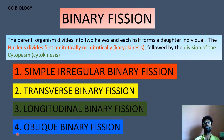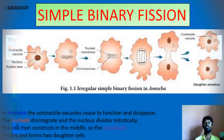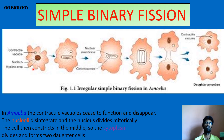Under binary fission we have the following sub-types depending upon the axis along which division takes place: simple irregular binary fission, transverse binary fission, longitudinal binary fission, and oblique binary fission. First let us see the simple irregular fission, which happens in the case of the protozoan commonly known as Amoeba.